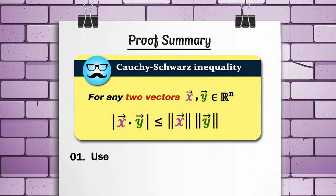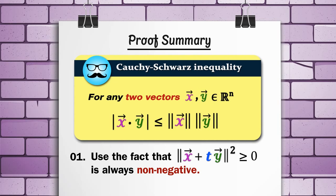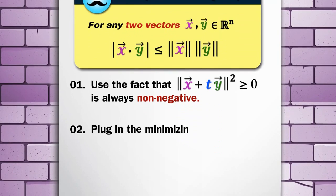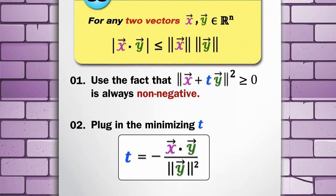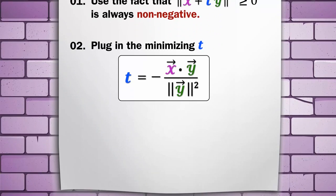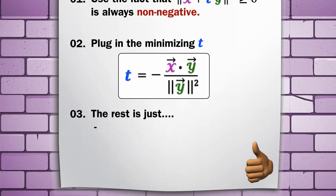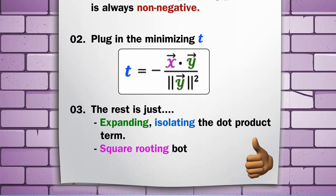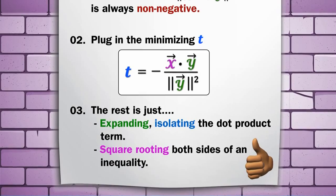To prove this, we are going to use the fact that the norm of x plus ty squared is always non-negative and plug in the minimizing t from the previous lemma. The rest is just expanding, isolating the dot product term and square rooting both sides of an inequality.